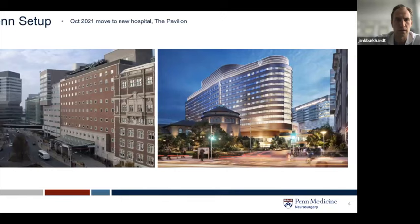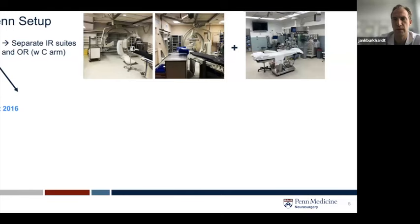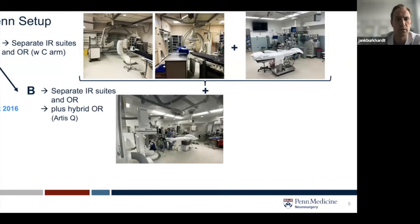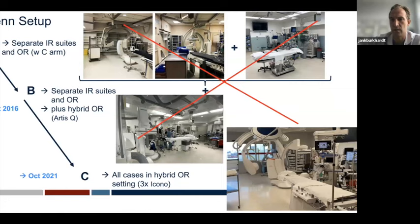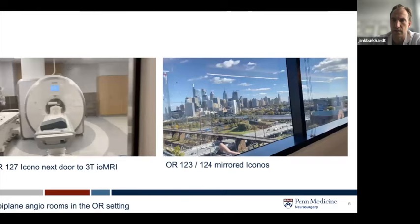Our setup: on the left you see our old hospital. In October 2021, we moved to a new hospital—the Pavilion—where we do all our inpatient procedures. Before the move, we had a separate setup: biplane rooms in radiology plus regular ORs, using a C-arm if angiography was needed during surgery. In October 2016, we acquired a hybrid room to do most open vascular procedures with intraoperative angiography capability. Since moving to the new hospital, we now have only hybrid OR rooms—three biplane angio suites embedded in the OR—so we do all diagnostic angios and open cases in the same setup.